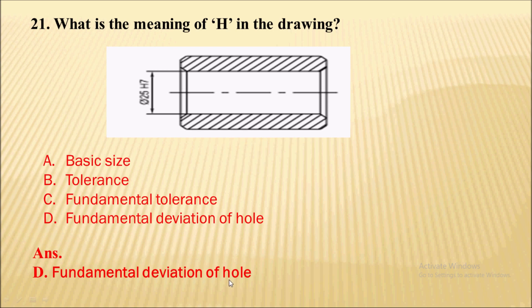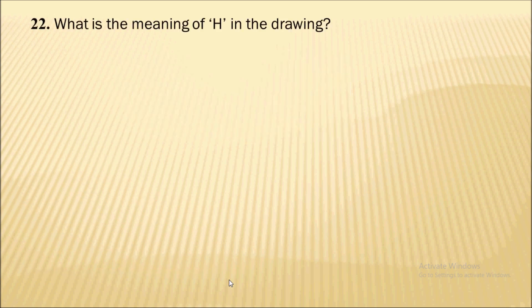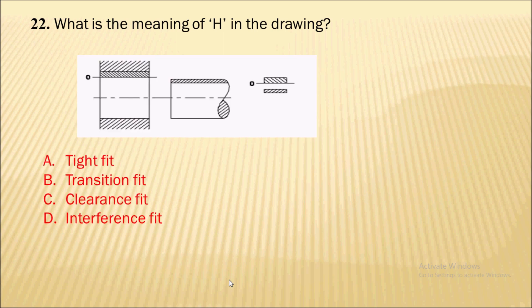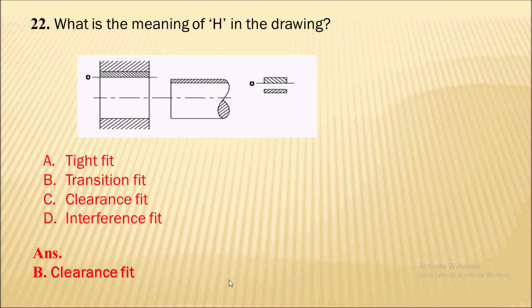If it is a small h, then it refers to the shaft — meaning it is the fundamental deviation for a shaft.